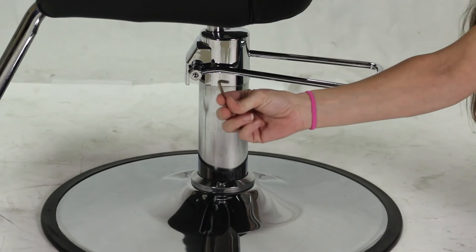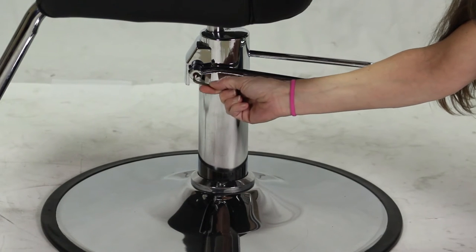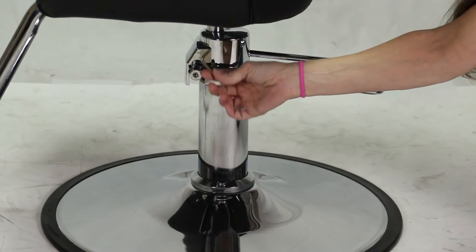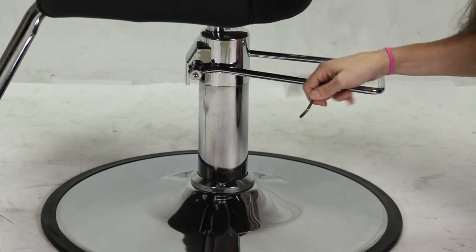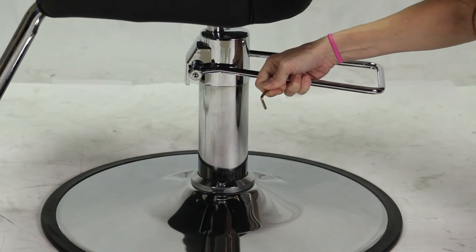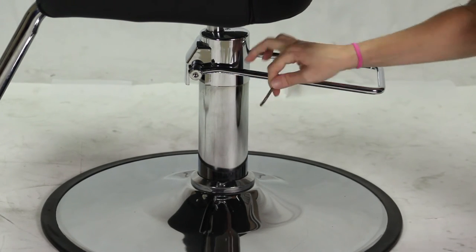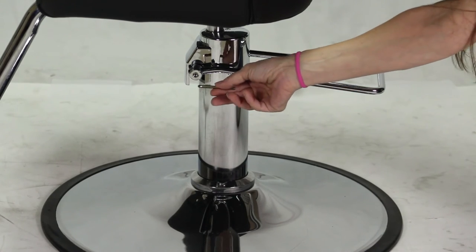just use an Allen wrench or a hex key on both sides of the pump just by unscrewing and push the pedal back and forth depending on which way you need it to go, and then re-tighten with the hex key.